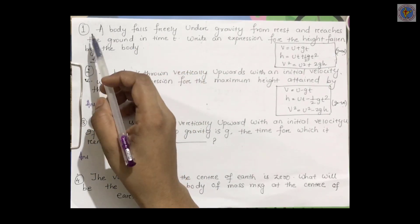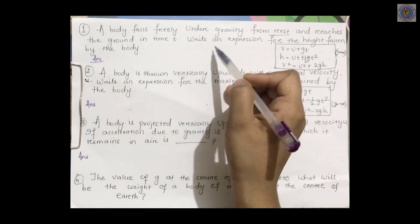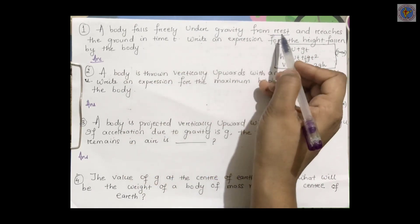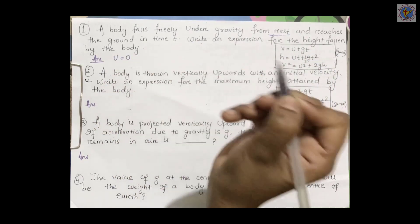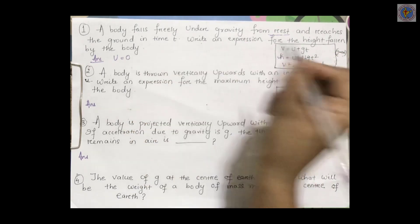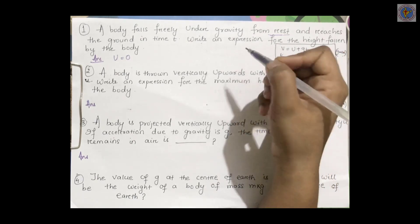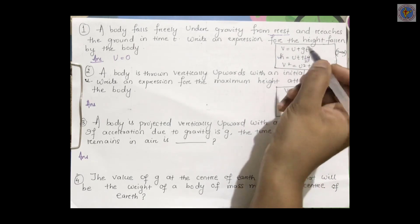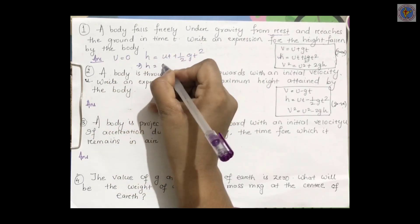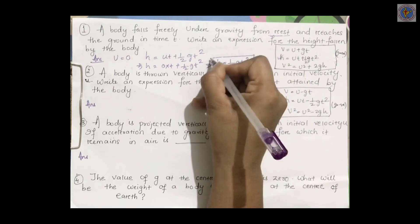Let us discuss some questions. First question: a body falls freely under gravity from rest. Rest means the initial velocity u is equal to 0. We need to find an expression for the height. You need to select the equation according to the given data. Since u = 0, using h = ut + half gt squared, the ut term drops out, giving h = half gt squared. This is the expression for a freely falling body.